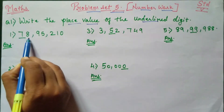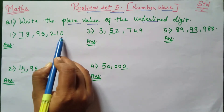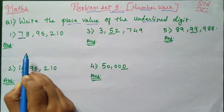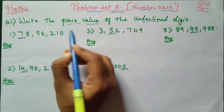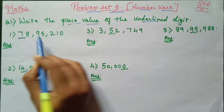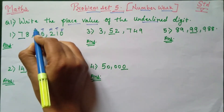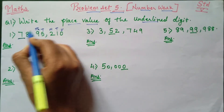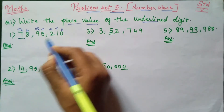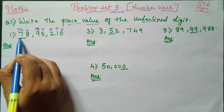First one: 78,95,210. Here they have underlined number 7. So to find out the place value, there are two ways. First, we have to write unit, tens, hundreds, thousands, ten thousands, lakhs, and ten lakhs above the numbers.